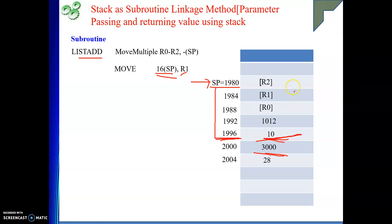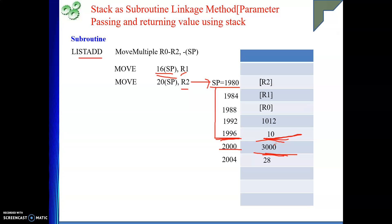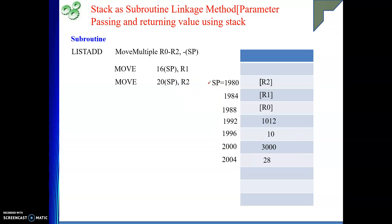So R1 holds the counter (10 — the number of elements) and R2 holds the base address 3000 of the array. This is how parameters are extracted inside the function using index addressing mode with respect to SP. SP itself does not change — neither operand is modified, but an effective address is produced. This part has to be very clear.